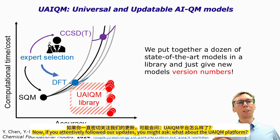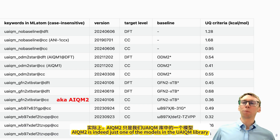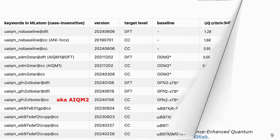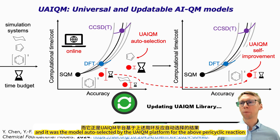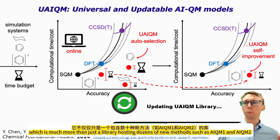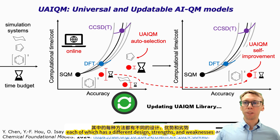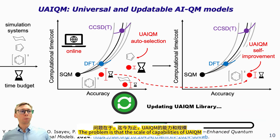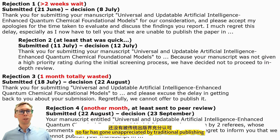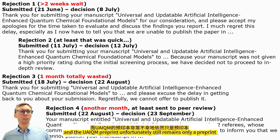If you attentively followed our updates, you might ask: what about the UA-IQM platform? AIQM2 is indeed just one of the models in the UA-IQM library, and it was the model auto-selected by the UA-IQM platform for the above pericyclic reaction. We do recommend using the UA-IQM platform, which is much more than just a library hosting dozens of new methods such as AIQM1 or AIQM2, each with different designs, strengths, and weaknesses. Unfortunately, the UA-IQM preprint still remains only a preprint, as its scale of capabilities has gone unappreciated by traditional publishing.